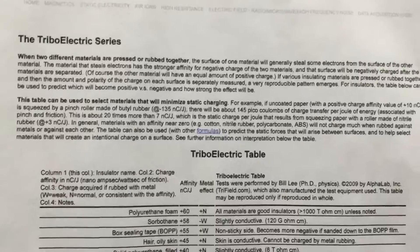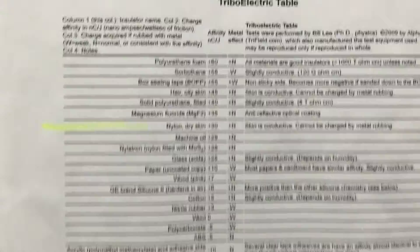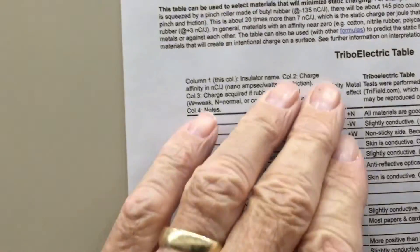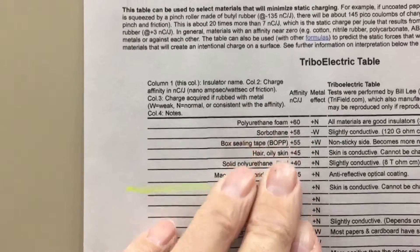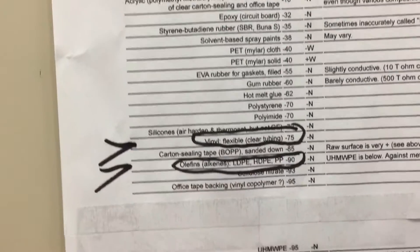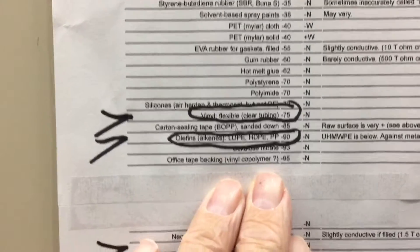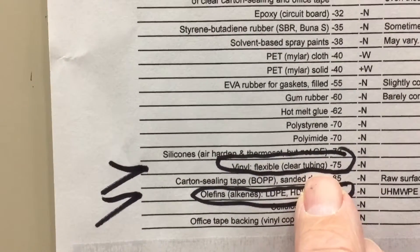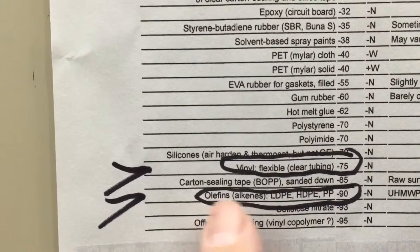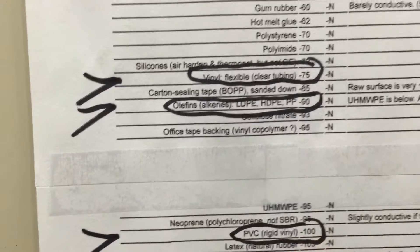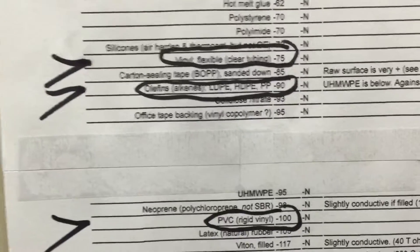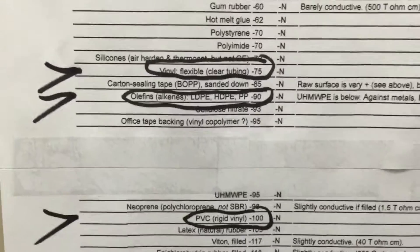This is the triboelectric series that I got from Alpha Labs off the internet. It's very good — I like it because at the bottom they describe how they obtained their data. Basically, materials at the top of this — the dielectrics up here — tend to lose electrons and become positive. As you go down, they go through neutral where there's not much change, all the way to the most negative at the bottom where they pick up a lot of excess electrons. I've highlighted here: vinyl — clear PVC tubing — at minus 75; polypropylene, like the chip I've got in that tube, at minus 90; and rigid PVC at minus 100. There's not that much difference between the polypropylene and either of those PVCs, which is why it's surprising it works as well as it does.